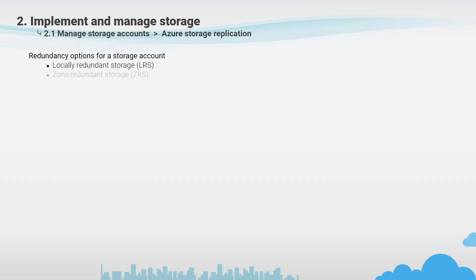In the primary region, data is always replicated three times. Azure Storage offers two options for replication in the primary region: Locally Redundant Storage (LRS) and Zone Redundant Storage (ZRS). LRS replicates your data three times within a single physical location in the primary region, providing at least 11 nines of durability over a given year. It is the lowest cost option and is suited for scenarios where data can be easily reconstructed if loss occurs, or where replication within a country is required due to data governance requirements.